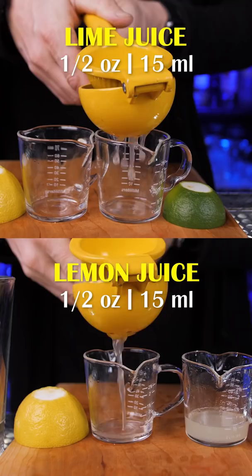In the shaker add 2 ounces of high quality gin, then we need fresh lemon and lime juice. Squeeze half an ounce of each.